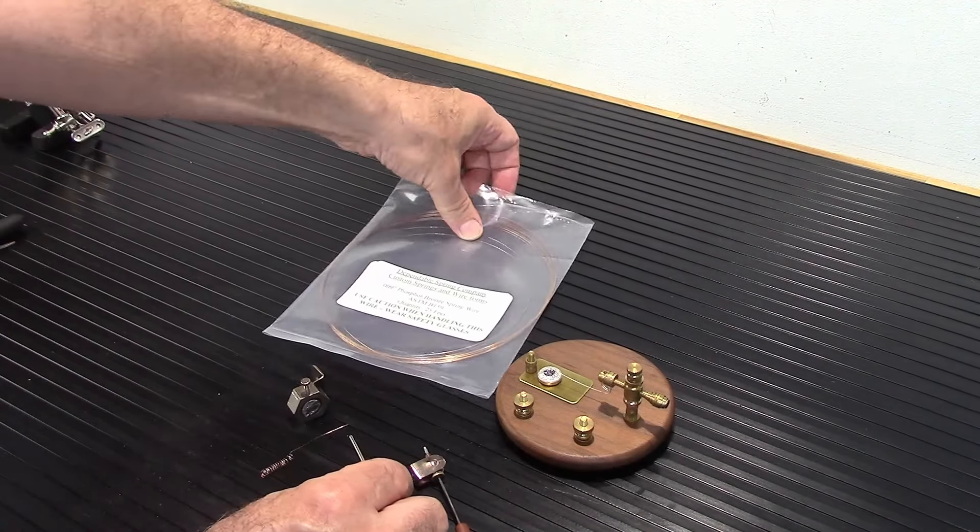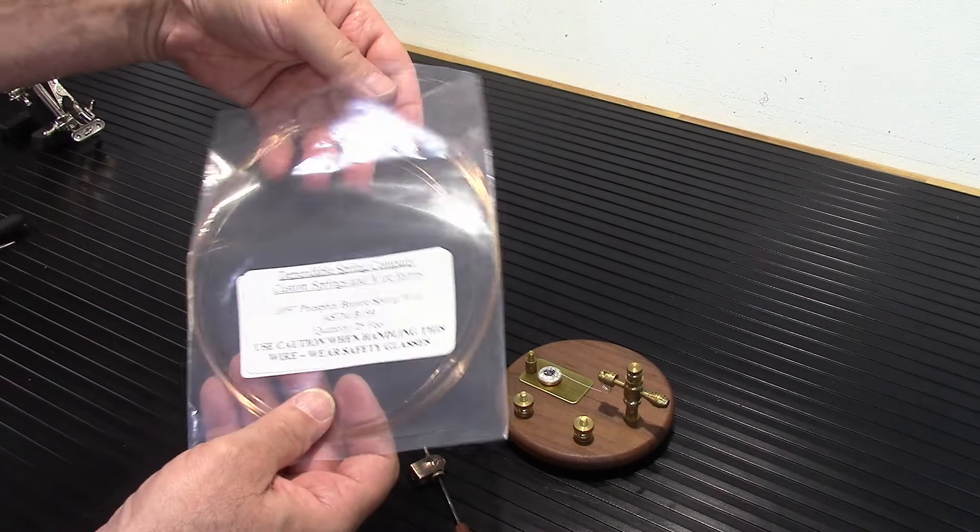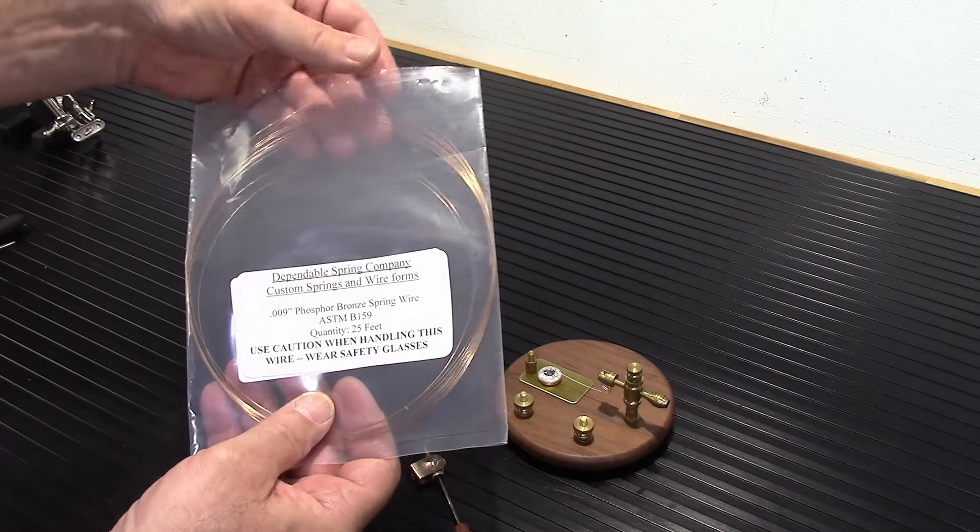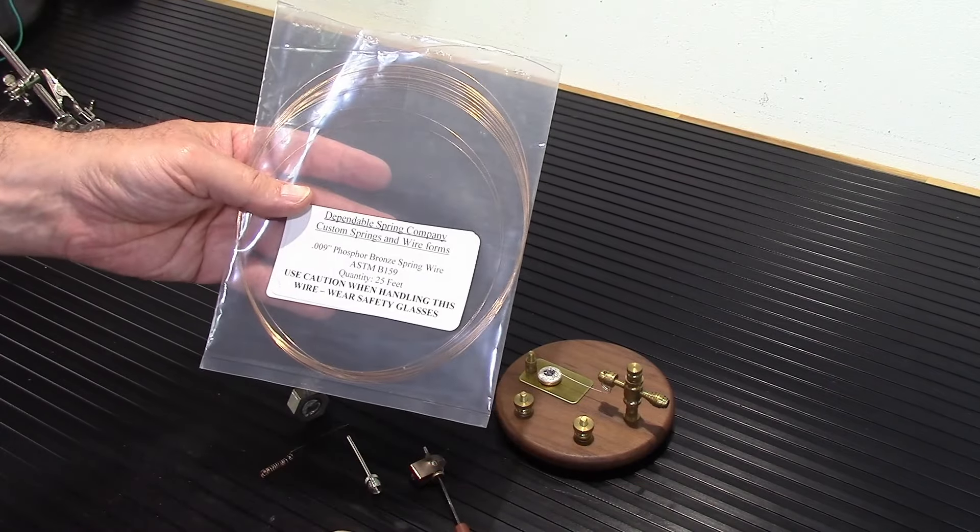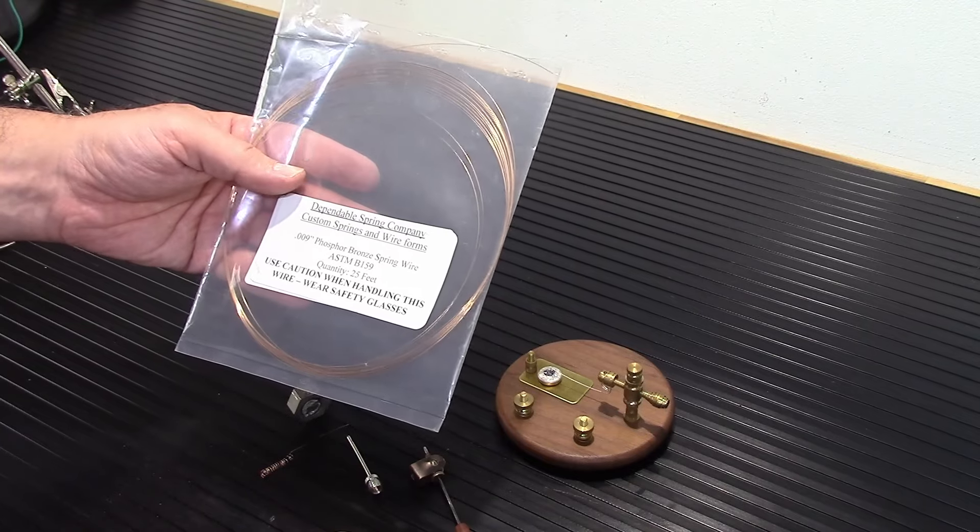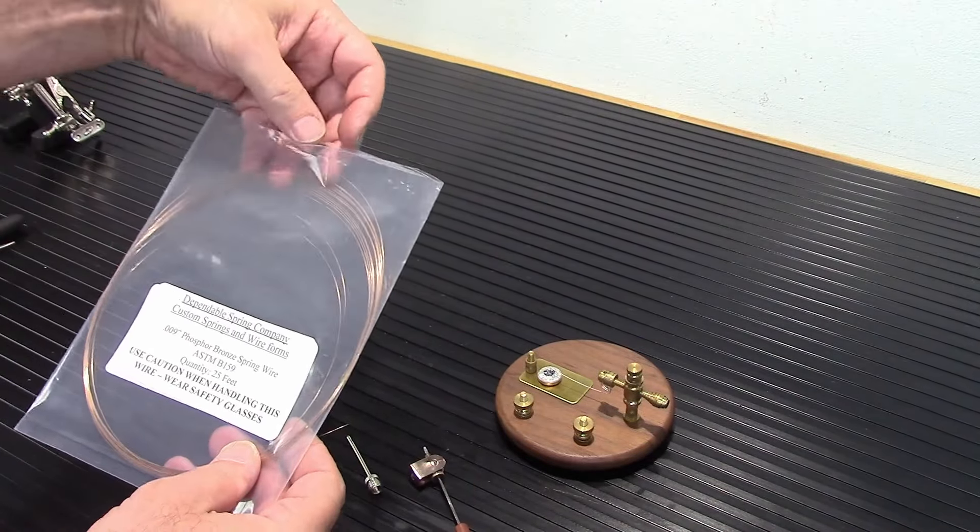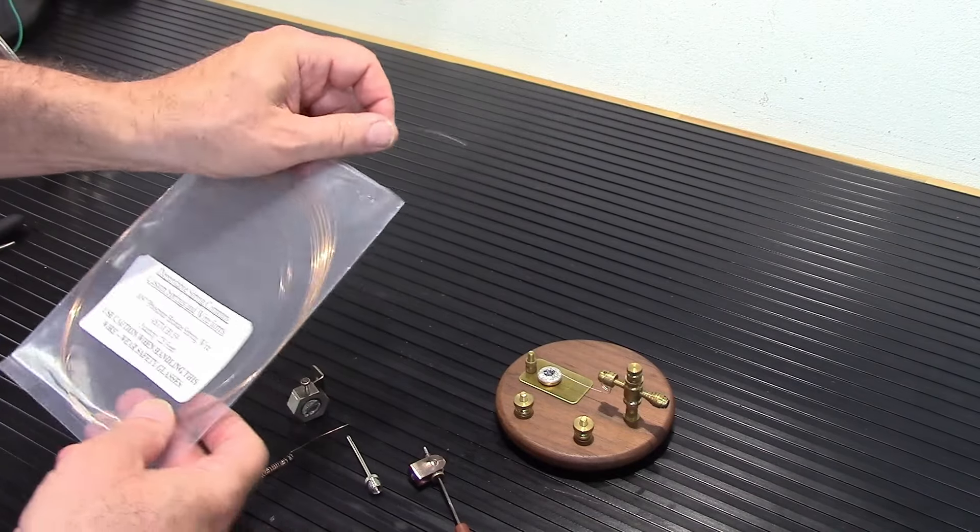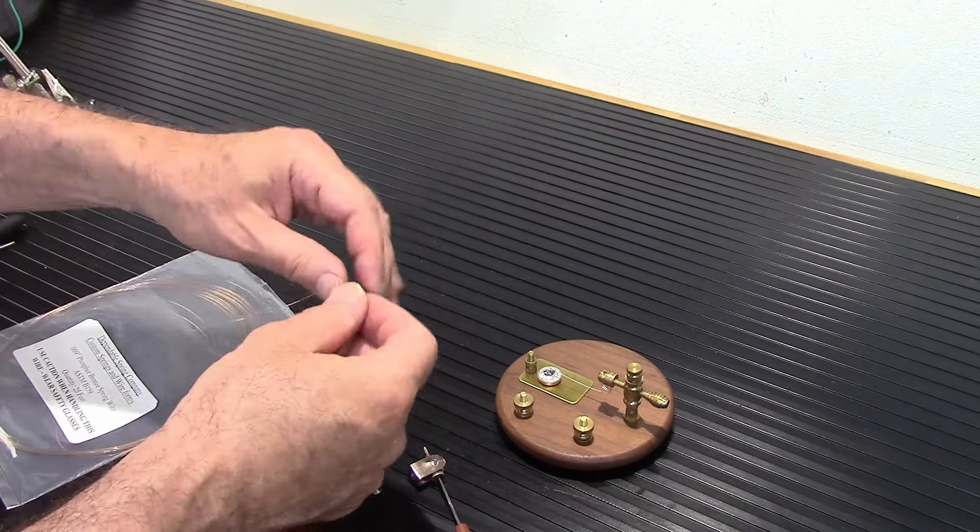Now the thing about spring wire, this spring wire here I picked up online through Etsy. It's available mainly for jewelry manufacturers. And this here is a type of spring wire. This is phosphor bronze spring wire. You can get different gauges. This just happens to be the one that I got. I kind of wish it was a higher gauge. But, oh well. Or, I'm sorry, lower gauge. I think it's too high a gauge.